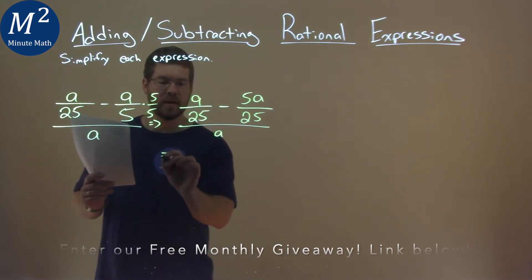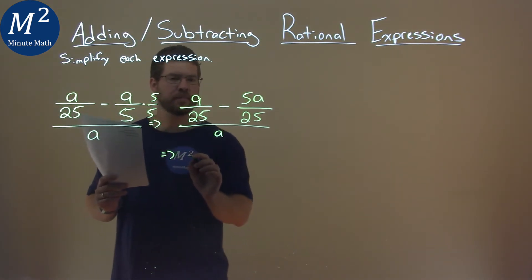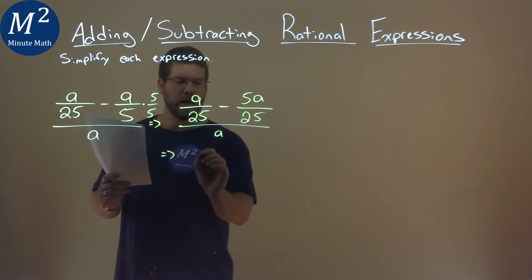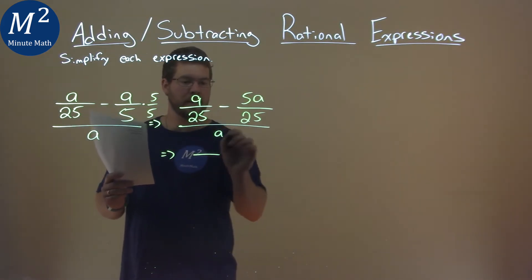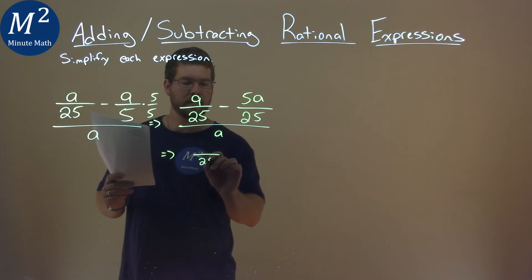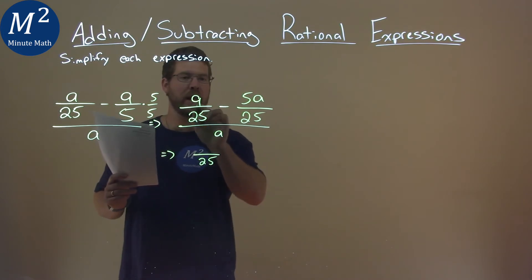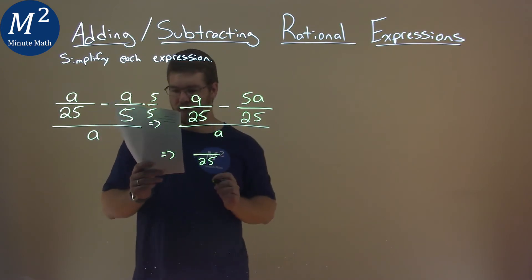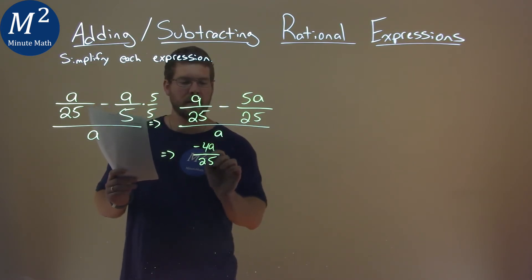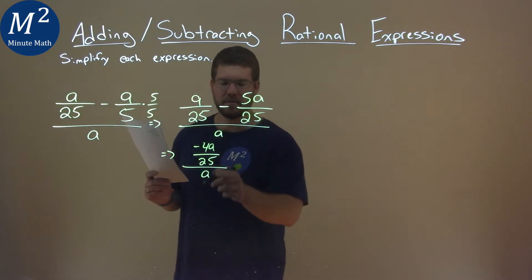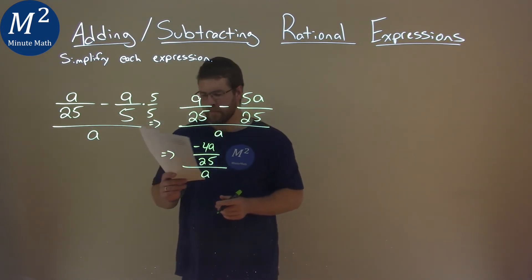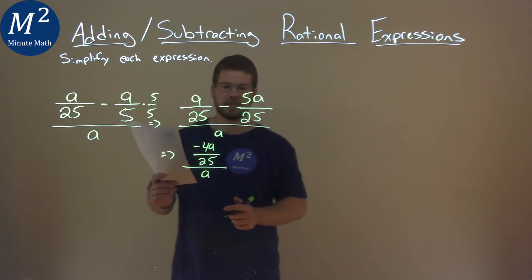By having the same base of 25, a minus 5a is negative 4a. So we have negative 4a over 25, all over that one a down here. Be careful with our fractions.